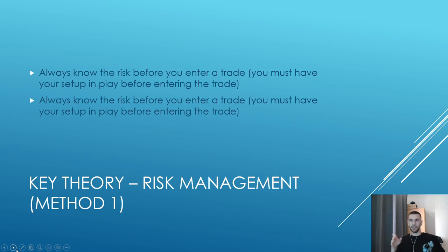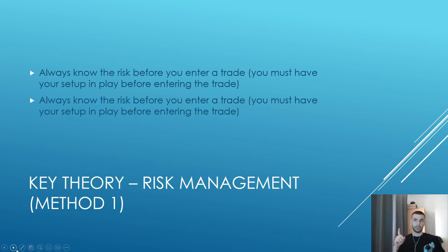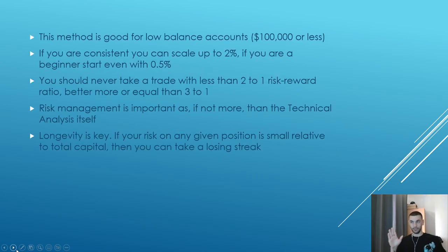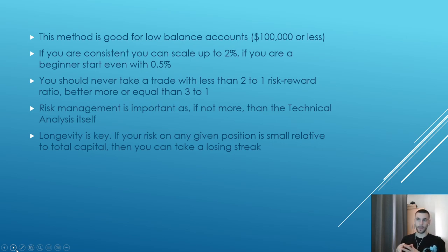There are two methods of risk management. The key theory is that you always know the risk before you enter the trade. You must always have your setup in play before you enter — I've written this twice because it's very important. Have the setup, have the plan, stick to it. This first method is good for low account balances, say less than 100k. If you're consistent you can scale up to 2% risk, but if you're a beginner start with 0.5%. You should never take a trade with less than a 2:1 risk-reward ratio — even better, aim for 3:1 if possible.